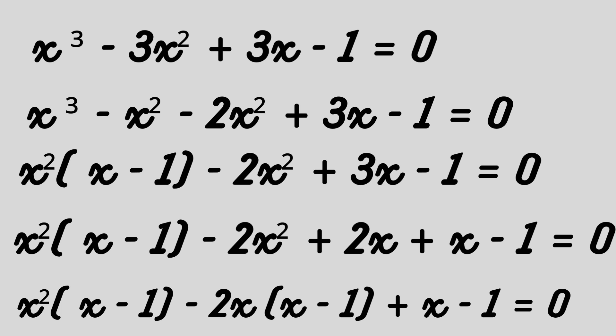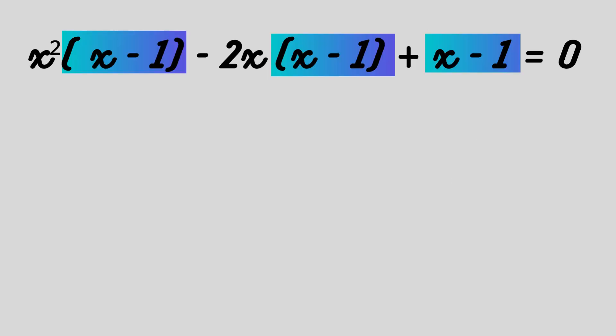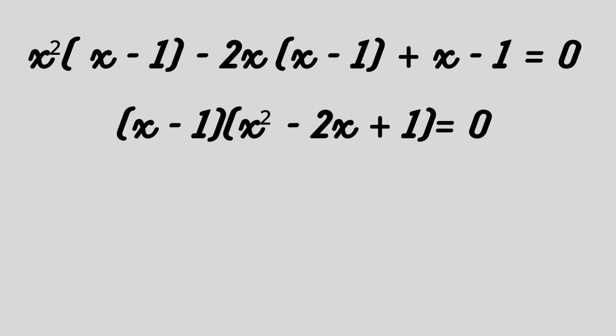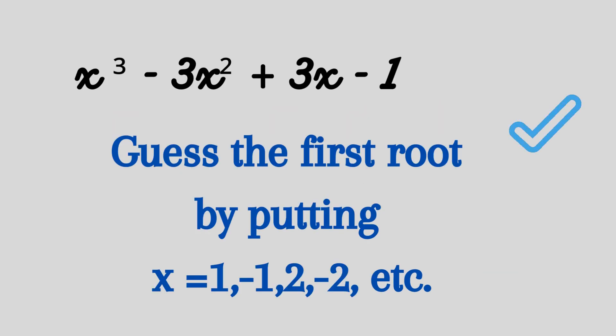We simply expanded the equation using (x - 1); multiplying these terms back gives the original cubic equation. Now we take (x - 1) as common: (x - 1)(x² - 2x + 1) = 0. We knew to factorize in the form (x - 1) because we found the root by hidden trial. You find the first root by hidden trial and the other roots follow easily.